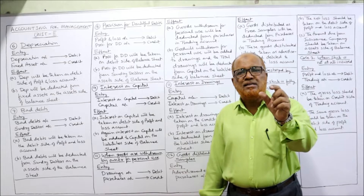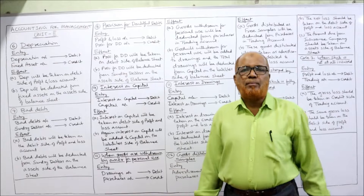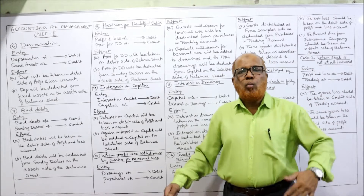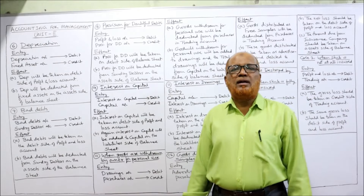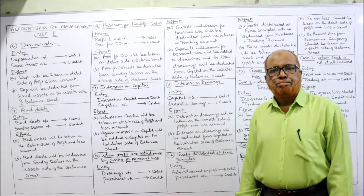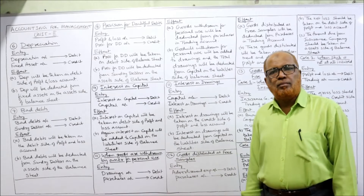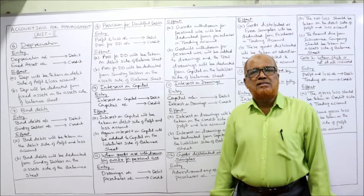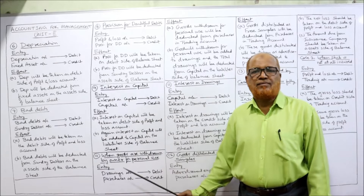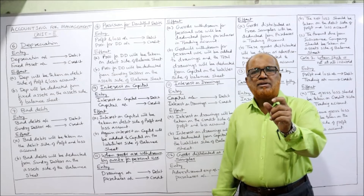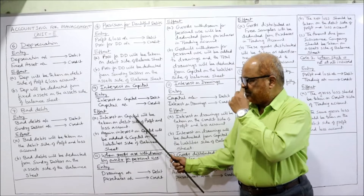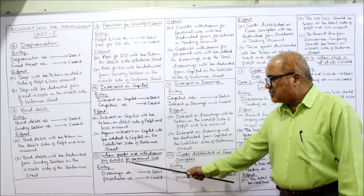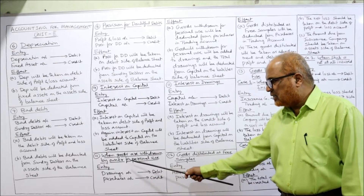The next adjustment is interest on capital. In some problems you'll find: 'provide interest on capital at 10 percent.' First calculate 10 percent of the capital to get the interest on capital. The entry is: Interest on Capital Account debit, Capital Account credit. The effect: interest on capital is taken on the debit side of the Profit and Loss Account, and this interest on capital is added to capital on the liability side of the balance sheet.